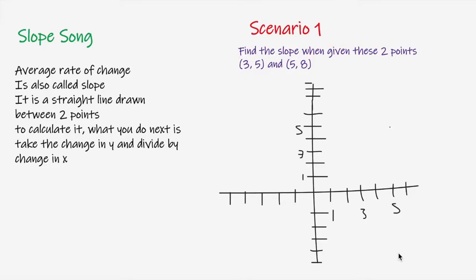Let's use the slope song to solve a slope problem. On the left we have our slope song — if you haven't seen the video, I'll have the card right here so you can check that out. On the right we have one of the scenarios you could encounter when dealing with slope: find the slope when given two points, (3, 5) and (5, 8). For this problem we'll refer to (3, 5) as point A and (5, 8) as point B.